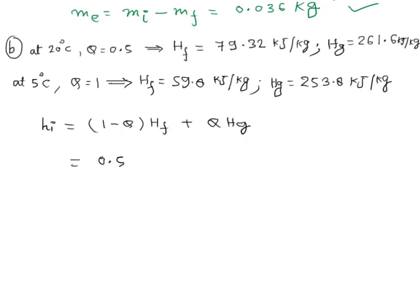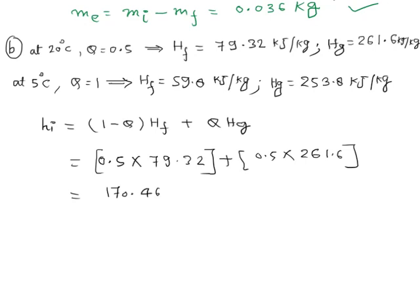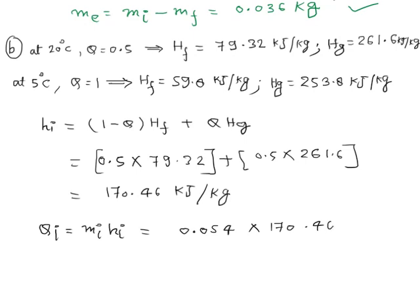With Q = 0.5 at 20°C, HF = 79.32 kJ/kg and HG = 261.6 kJ/kg. So initial enthalpy = 0.5 × 79.32 + 0.5 × 261.6 = 170.46 kJ/kg. The initial heat equals initial mass times initial enthalpy: 0.054 kg × 170.46 kJ/kg = 9.2 kJ.